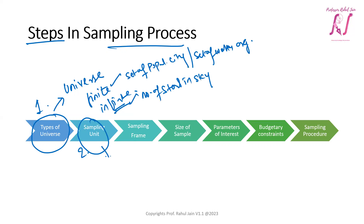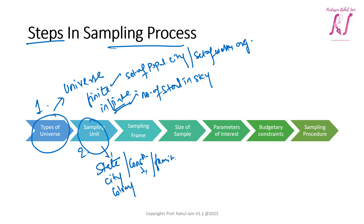The second step is the sampling unit. A decision has to be made concerning the sampling unit before selecting the sample. The sampling unit may be geographical — such as a state, a city, or a colony. It can also relate to constructions like flats or houses, or social units like a family, a club, a group, or a kitty party group. We need to choose a very important and precise sampling unit.